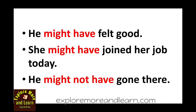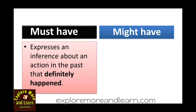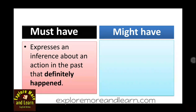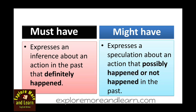I hope you've understood it well. In short: must have expresses an inference — a sure guess about a past action that definitely happened. Might have expresses a speculation about an action that possibly happened or did not happen in the past. With must have you are sure about what you are saying, but with might have you are just making an uncertain guess. That is the difference between must have and might have.